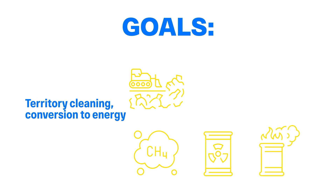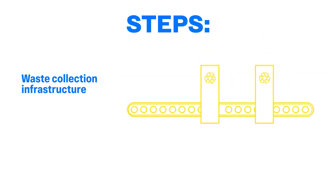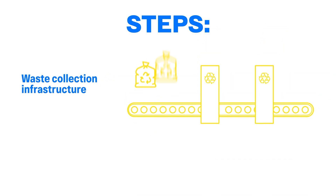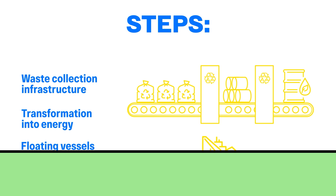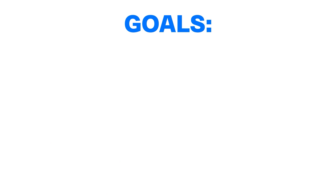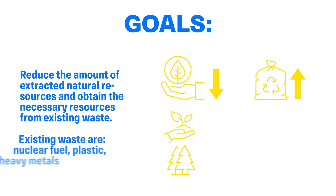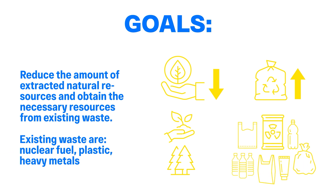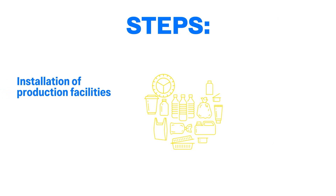Goals: Cleaning the territory from human waste by converting it into energy. Human waste includes plastic, nuclear fuel, oil products, salts of heavy metals, man-made mines, storage batteries, and food waste. Steps: Create a waste collection infrastructure by installing receiving and sorting facilities; recycling of waste by transformation into energy; develop and implement floating vessels to clean the ocean.